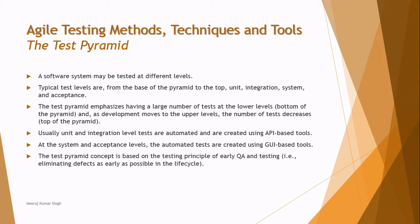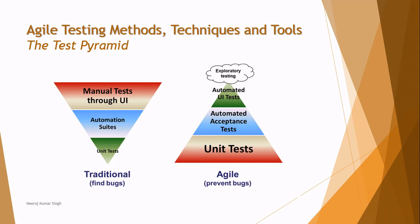When you talk about different levels of testing — unit, integration, system, and acceptance — in traditional approaches we perform less unit testing, comparably more integration, then a little more system testing, and then acceptance. The traditional approach has a core objective of finding bugs, and we do not perform much unit testing; the levels slightly increase as we proceed. Automation is also minimal compared to manual, especially with respect to the UI.